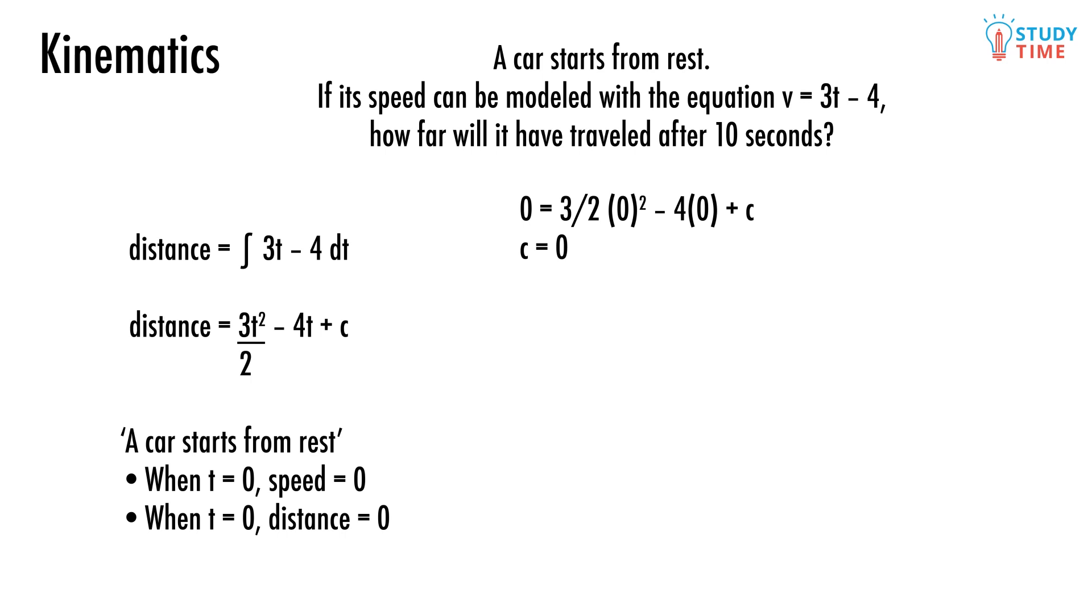Great. So we can now say that the final equation for the distance of the car is distance equals 3/2 times t squared minus 4t. The original question asked us to calculate how far the car had travelled after 10 seconds. In other words, when t equals 10, what is distance? All we have to do is swap the t's in our equation with 10s and work it out on our calculators. Distance equals 3/2 times 10 squared minus 4t equals 150 minus 40 equals 110 meters.